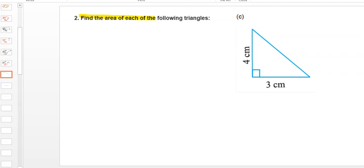Today's question is find the area of each of the following triangles. This is the third part of the second question from class 7, chapter 11.2.